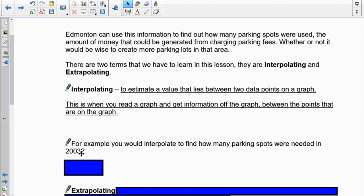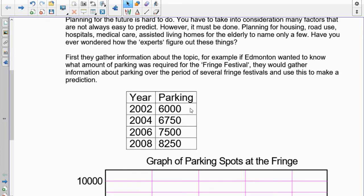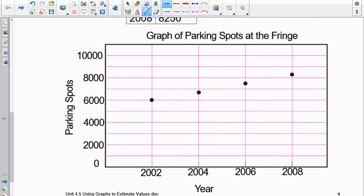So you take a look here and ask the questions. For example, you would interpolate to find the parking spots which were needed in 2003. So we can go back here, 2003, grab our lines, go over here. 2003 is halfway through. So we would go up to right about there. And then we would go over.